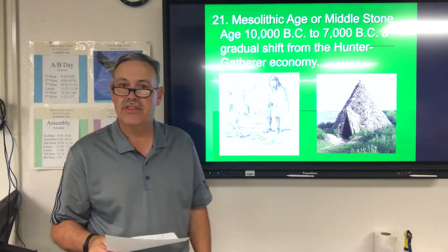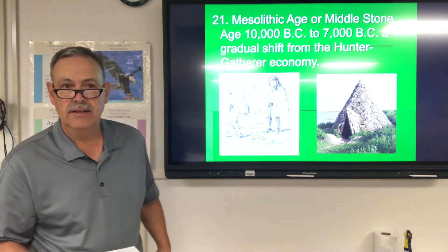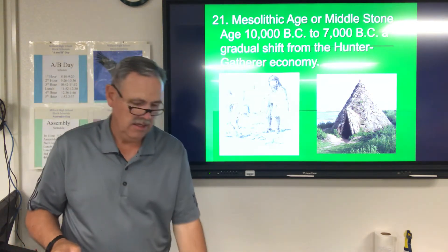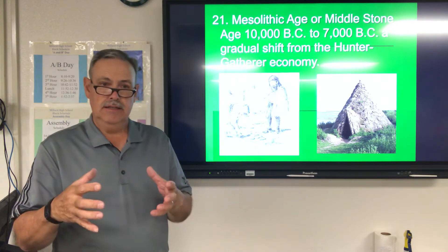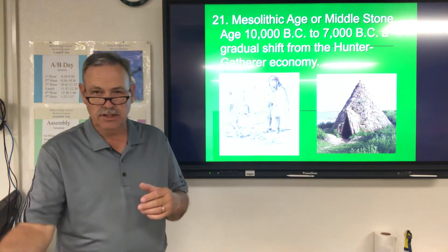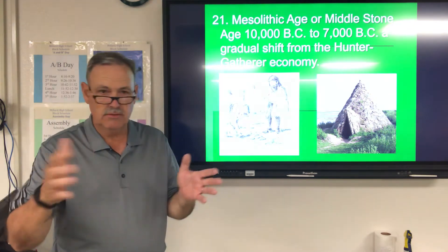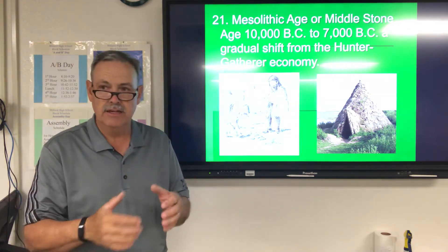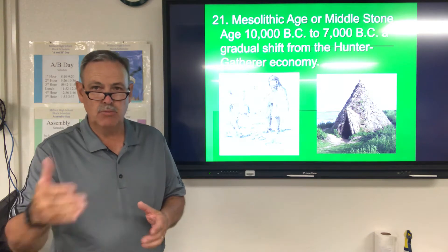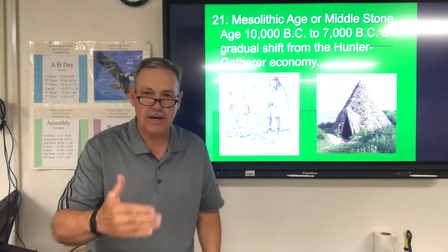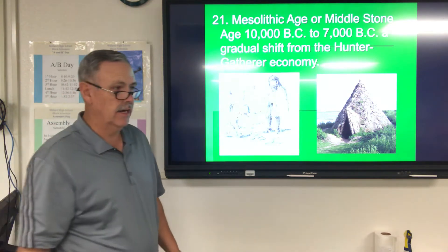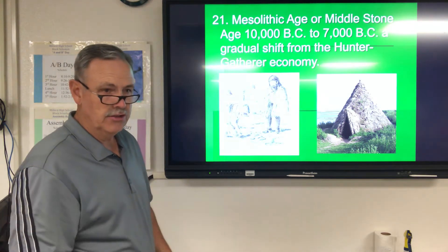This period spans 10,000 to 7,000 B.C. At this time there was a gradual shift from the hunter-gatherer economy, where they were out hunting for roots, berries, nuts, and whatever they could find — hunting for animals — to becoming more settled. It was a gradual shift involving quite a bit of trial and error and process of elimination.